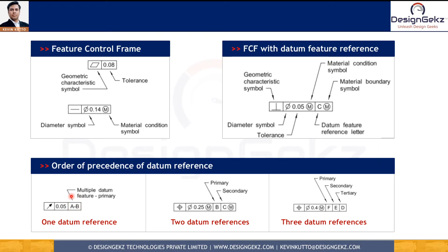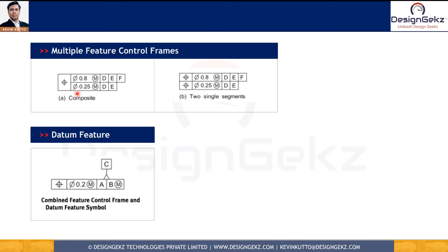You will also see composite control and multi-segment feature control frames. In composite control, the first column where the geometric characteristic symbol is shown is merged. The composite feature control frame is applied to control the patterns with respect to datums and to control the relationship of all features within the pattern. The upper segment is called the Pattern Locating Tolerance Zone Framework, while the lower segments are called Feature Relating Tolerance Zone Frameworks. Both frameworks are interconnected — the lower tolerance zone must always be lesser than and part of the upper tolerance zone.